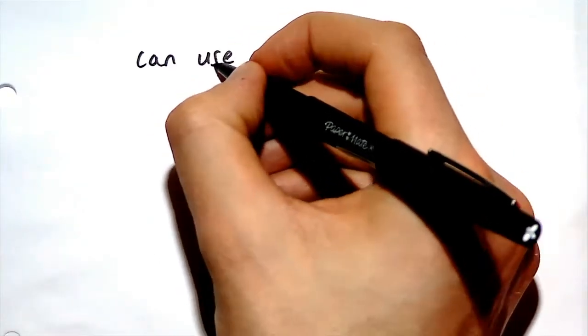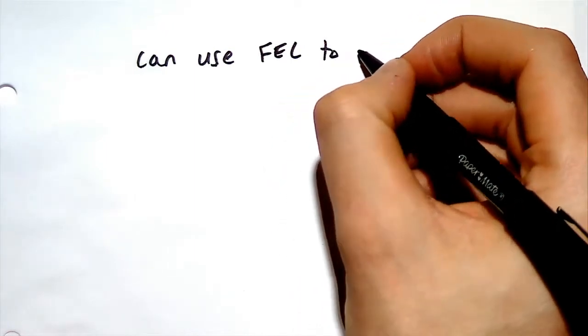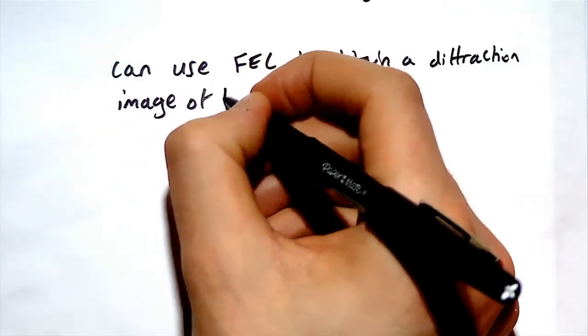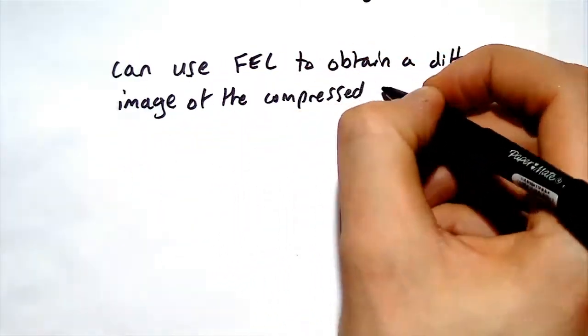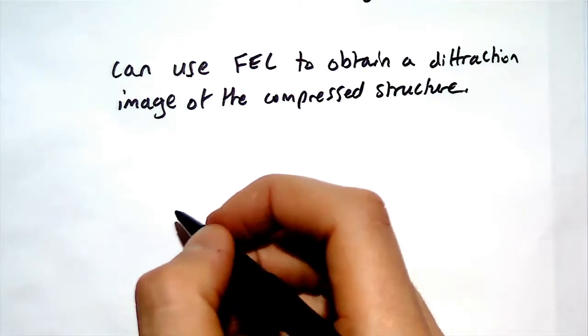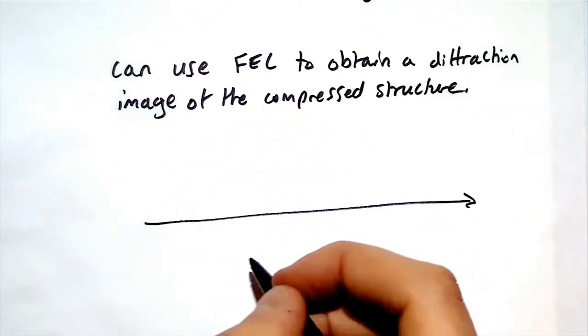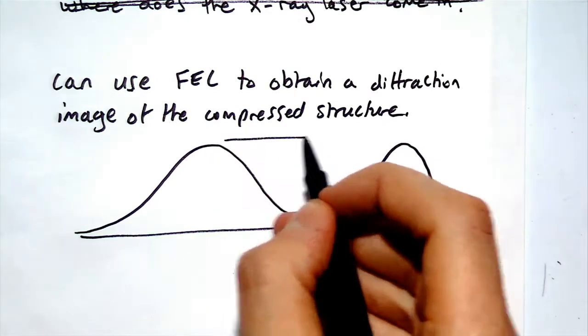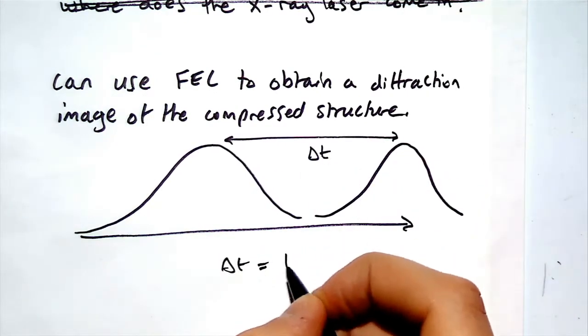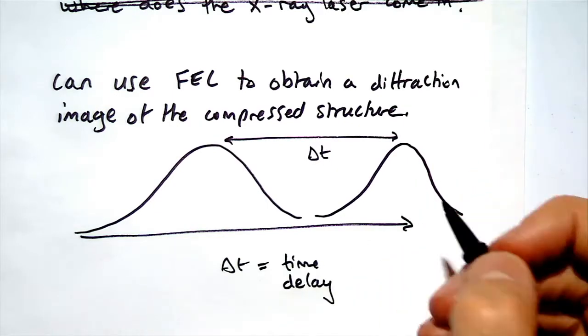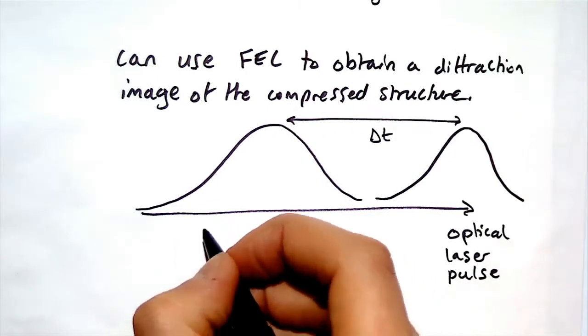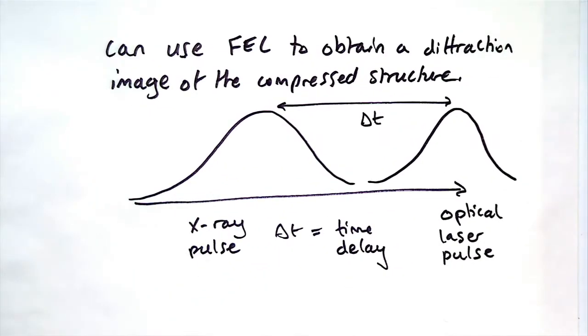But where does the free electron laser come into all this? So far we've just considered the compression of the material. The X-ray free electron laser is often used for the diffraction experiments, where it's used to image the compressed structure and see how it changes with time. To achieve this, they use two different pulses. The first being the optical laser pulse, which compresses the material, followed by, after some time delay, the X-ray pulse. Varying delta T then allows them to piece back together how the structure changes with time.